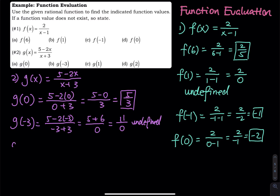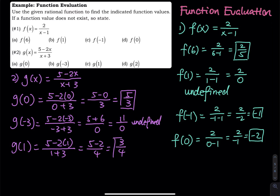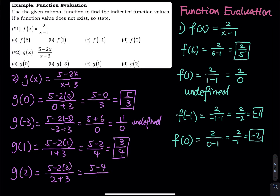When x is equal to 1, you have 5 minus 2 times 1 divided by 1 plus 3. That is 5 minus 2 divided by 4, so you have 3 divided by 4. And then the last one, g of 2: you have 5 minus 2 times 2 divided by 2 plus 3. So that is 5 minus 4 divided by 5, and the answer is 1 fifth.